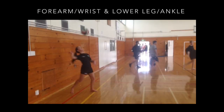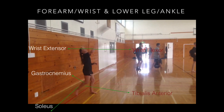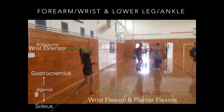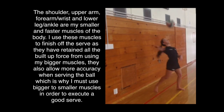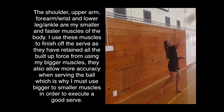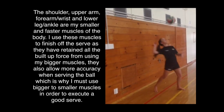The final group in the sequence is the forearm and wrist, and lower leg and ankle, with the ellipsoid joint of both the ankle and the wrist. This involves the wrist flexor and wrist extensor for the forearm and wrist, and the gastrocnemius, soleus and tibialis anterior for the lower leg and ankle. This shows two types of joint movements: wrist flexion, with the wrist flexor as agonist and wrist extensor as antagonist, and plantar flexion, with the gastrocnemius and soleus as agonist and the tibialis anterior as antagonist. The shoulder, upper arm, forearm and wrist, and lower leg and ankle are my smaller and faster muscles, used to finish off the serve and allow more accuracy.